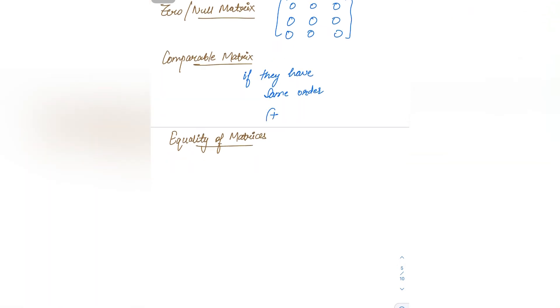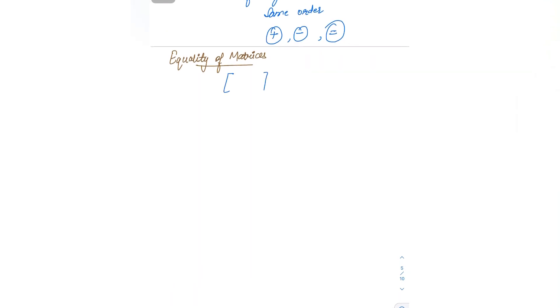Next is the zero or null matrix — a matrix in which all elements are zero. It can be of any order, whether rectangular or square. Comparable matrices: two matrices are comparable if they have the same order. When both matrices have the same order, they can be compared — either added, subtracted, or checked for equality. Equality of matrices: two matrices are said to be equal if their corresponding elements are equal and their orders are also equal.